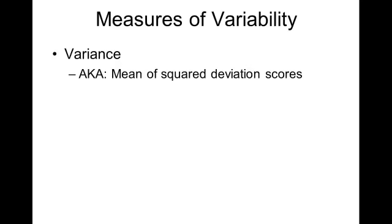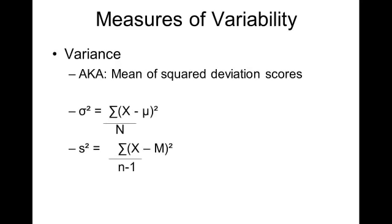Another kind of variability is the variance. And a way of thinking about the variance is the mean of the squared deviation scores. And to help us understand that, let's look at the actual calculations.